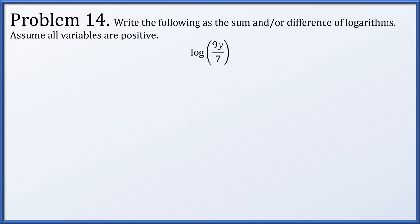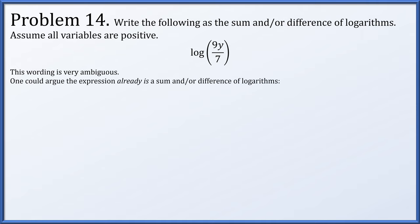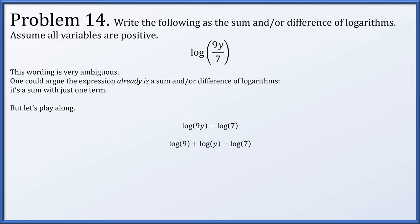Problem 14: write the following as the sum and/or difference of logarithms (all variables positive) — the common logarithm of 9y over 7. Since we have the logarithm of a quotient, we break it up as a difference. Then log of 9y is the logarithm of a product, which breaks up as a sum: log of 9 plus log of y minus log of 7.